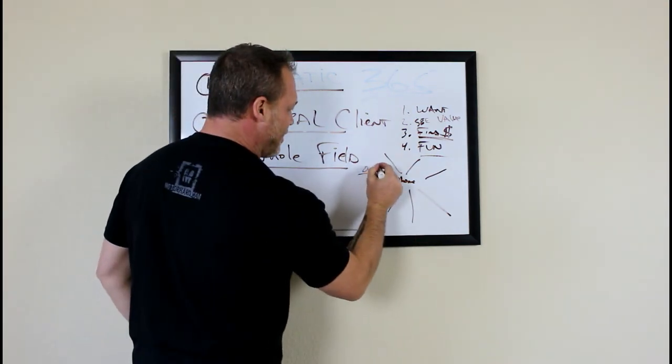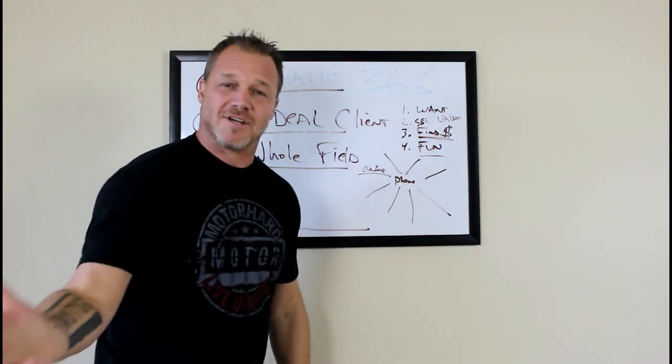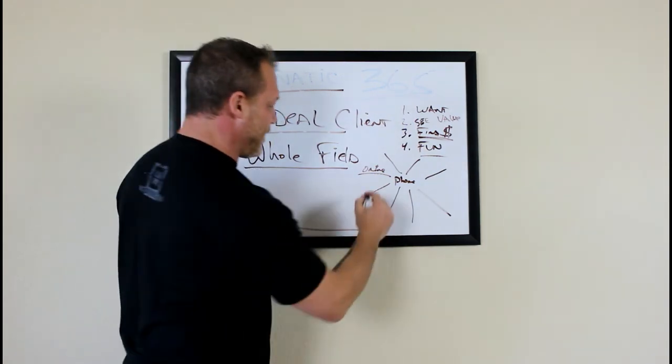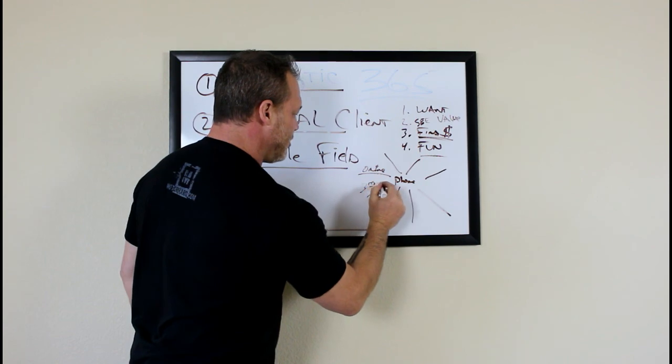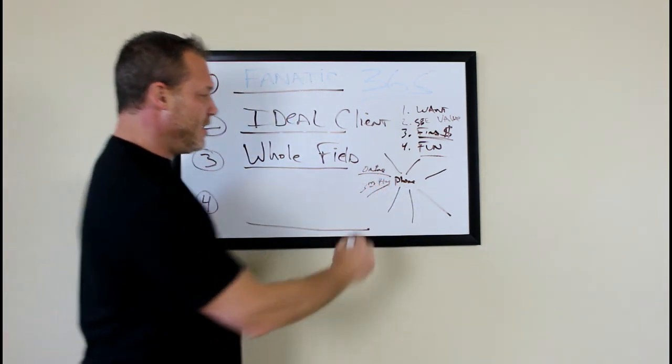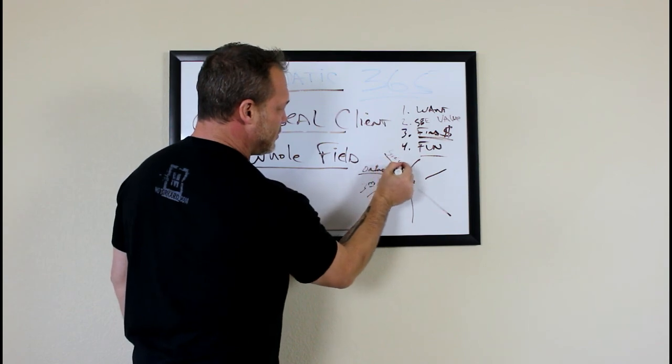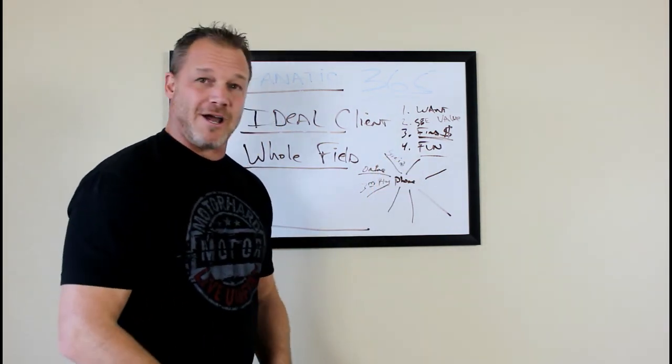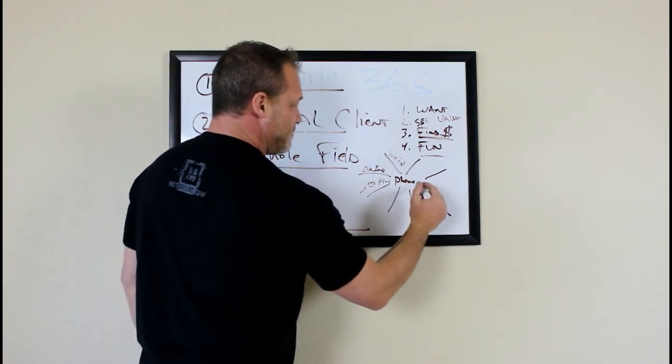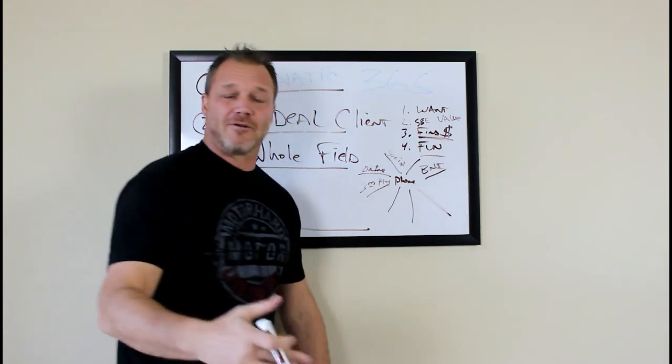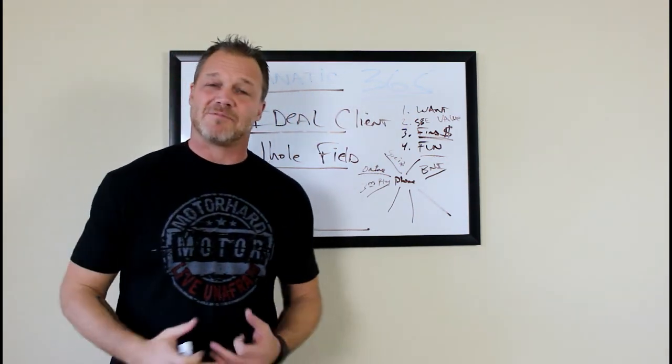You've got online stuff like Google. Of course, you got to be on Google. You've got third-party online stuff like Angie's List and Home Advisor. That's third party. You've got social, social media, Facebook, Instagram, all that good stuff. You've got BNI groups, networking groups, local networking, business meetups, things like that.